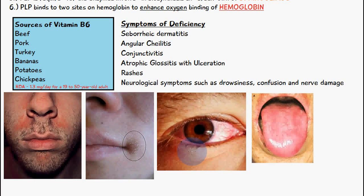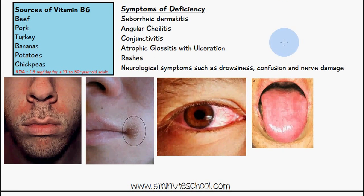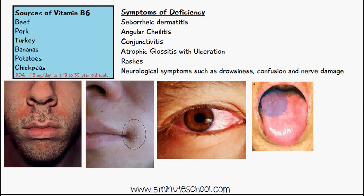Vitamin B6 deficiency also contributes to chronic conjunctivitis, as seen in this diagram, and atrophic glossitis with ulceration, which is inflammation of the tongue. Additional symptoms include rashes on the skin, and neurological symptoms such as drowsiness, confusion, and nerve damage.